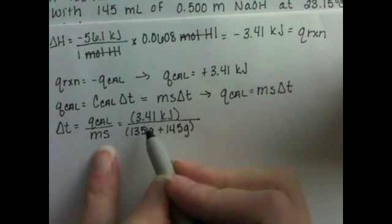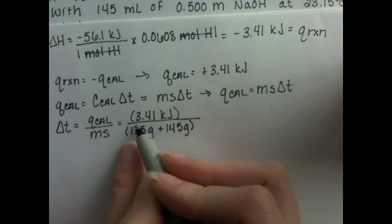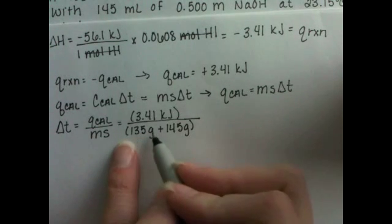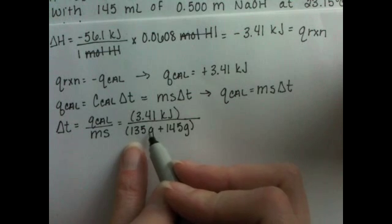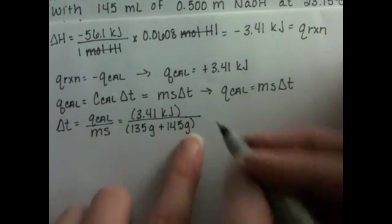Okay, so again, the mass of the solution is 135 grams for the 135 milliliters of HI and 145 grams for the 145 milliliters of NaOH.